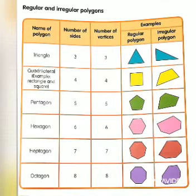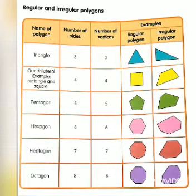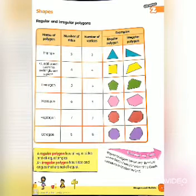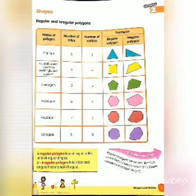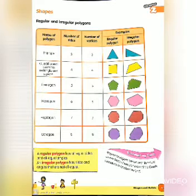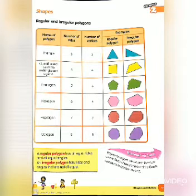Look at the chart on page number 17. In the bar you can see the name of the polygon, number of sides, number of vertices, and an example of regular and irregular polygon. Firstly, the triangle shape — a triangle has three sides and three vertices. In a regular polygon, the triangle has all equal sides and all equal angles, but in an irregular polygon the sides and angles are not equal.